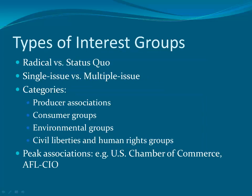There are types of interest groups. You can think of some as being radical and others being more supportive of the status quo. Many interest groups are multiple-issue, but some are single-issue groups. You have a large number of interest groups that represent businesses or producers, called producer associations. There are also interest groups that represent consumers, environmentalists, civil libertarians, and so forth.